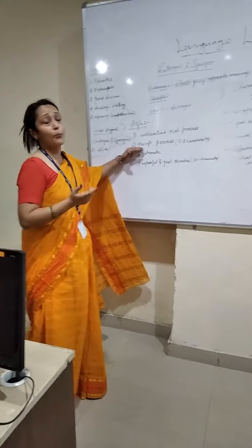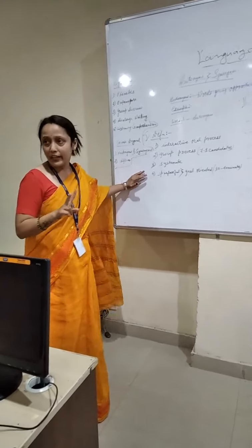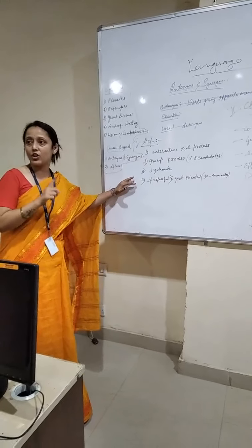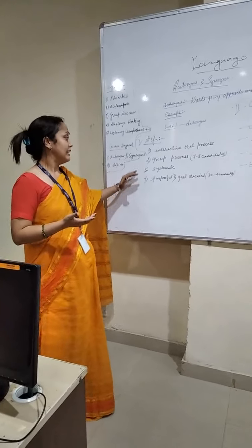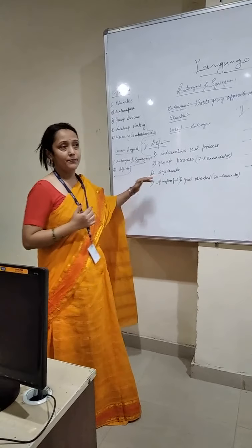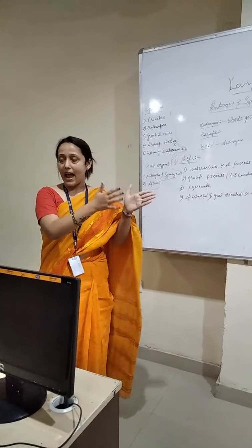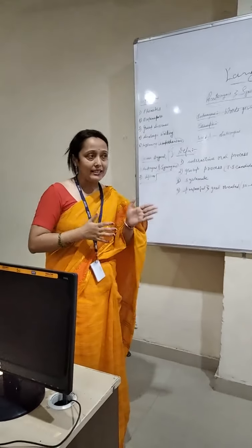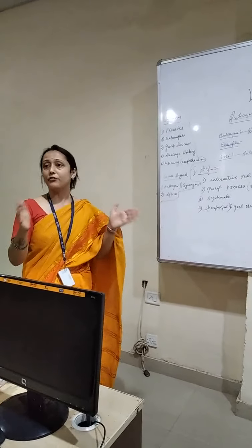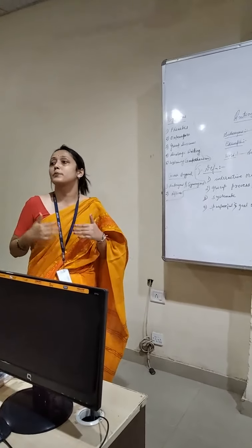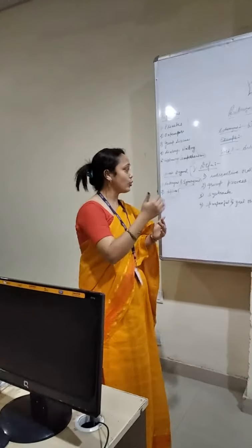The second characteristic is that it is a group process. As I said, in a group discussion there are basically two teams, each team consisting of 7 to 8 candidates, and thus they express their perceptions. The third one is systematic. There are 7 to 8 candidates in each group, and they sit face to face and then express their perceptions or their thoughts — and in the same way, it goes systematic.